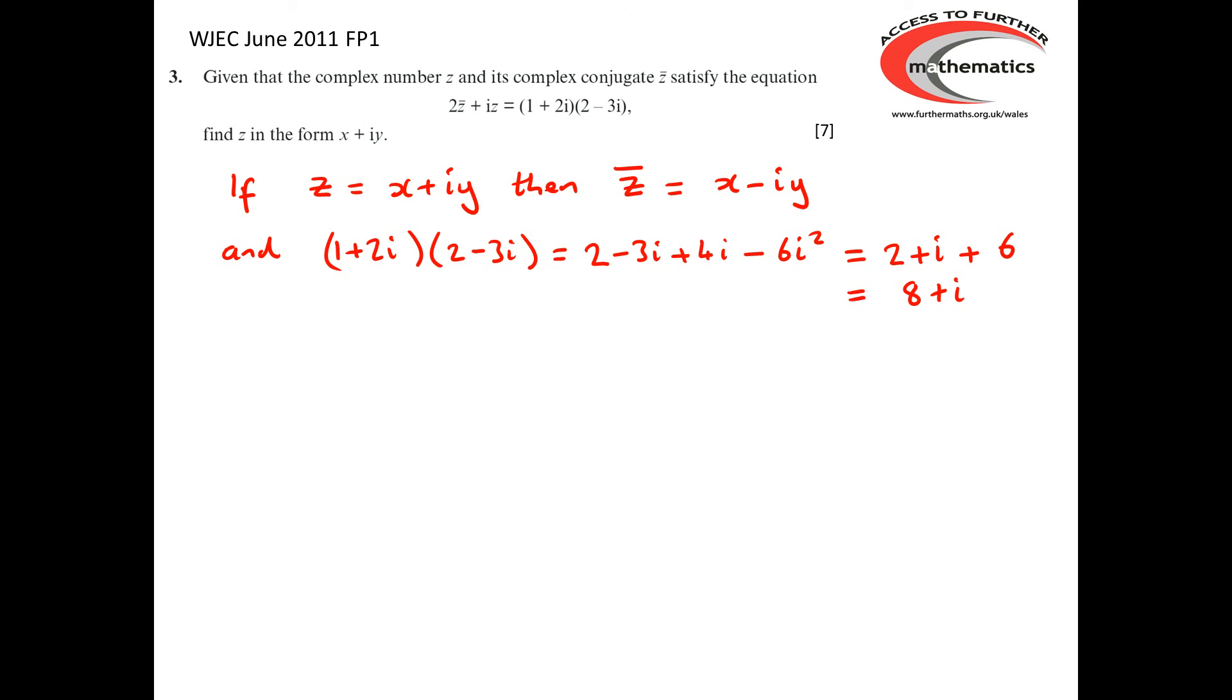So we can now rewrite the original equation in a much simpler form. We can say that we've got 2 lots of (x - iy) + i(x + iy) = 8 + i. Multiplying out the brackets, that's 2x - 2iy + ix + i²y must equal 8 + i.